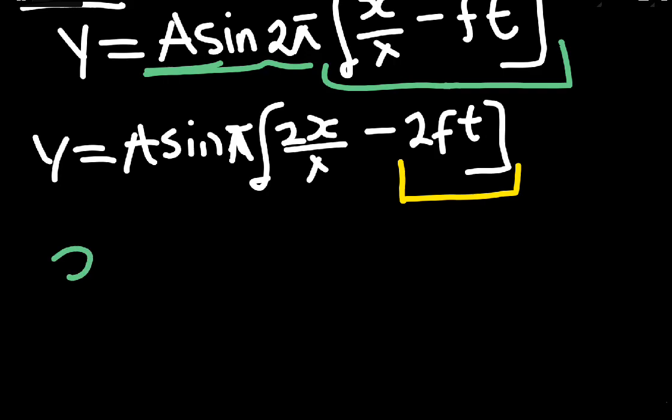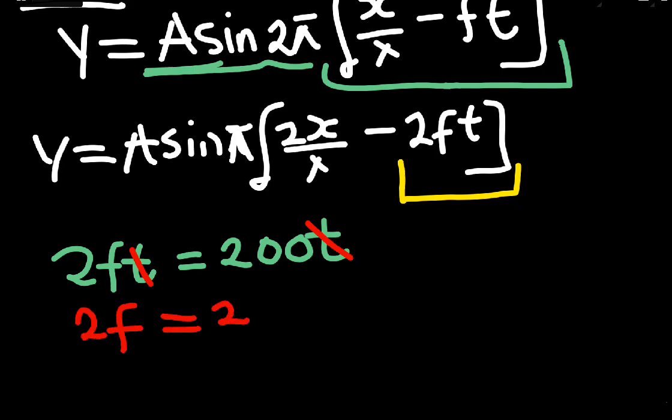I will just say 2ft equals 200t. Next, the t will cancel each other. This t cancels this t, and I'll be left with 2f equals 200.